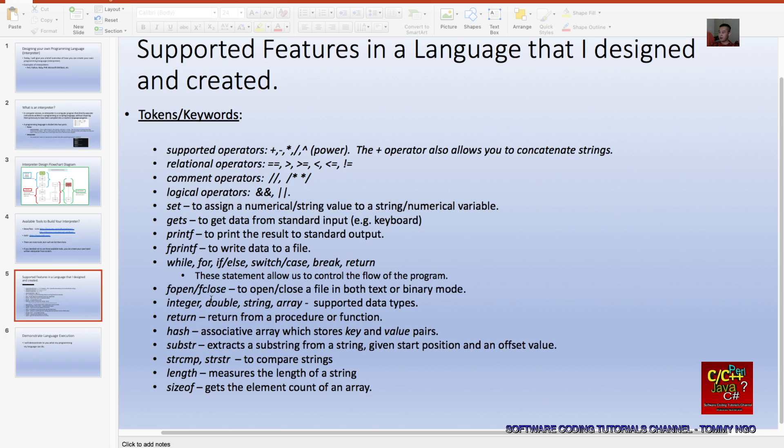Fopen and fclose allow you to open or close a file, both text or binary mode. Here are the supported data types: integer, double, string, or array. Then we have return, which I already talked about, and hash keyword, which allows you to create an associative array which stores key and value pairs.